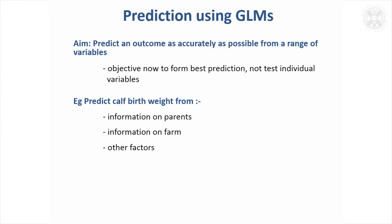I won't do an example just now of predicting using general linear models, but we'll look at that for one of the other techniques after the break. Just to draw your attention to the fact that we had a predictive model using multiple regression, but now we can bring in factors as well — categories and groupings of the data — into a prediction model.